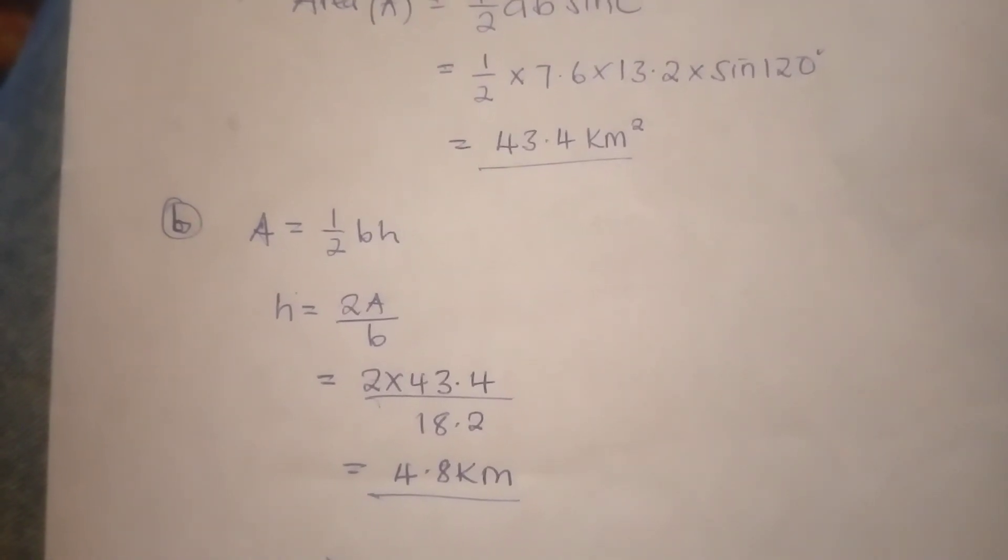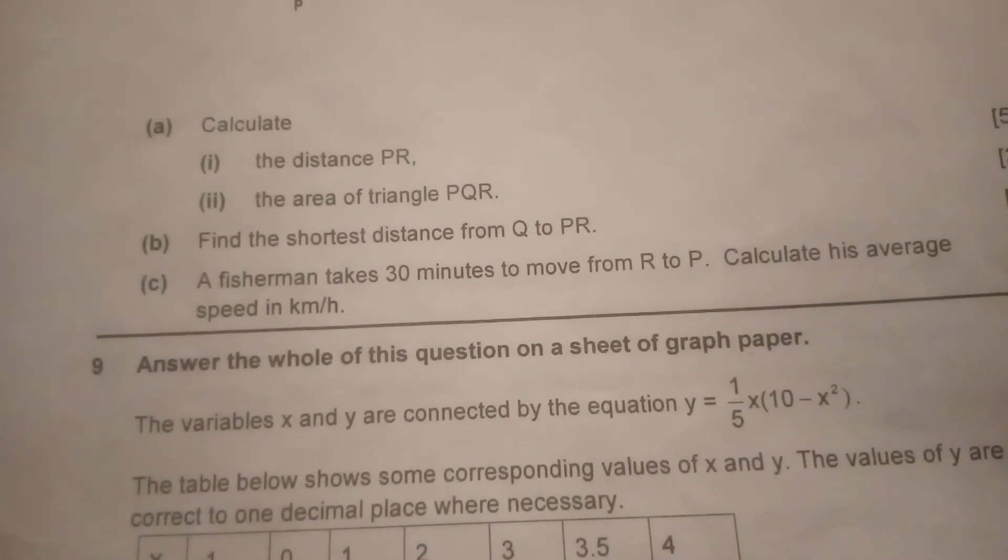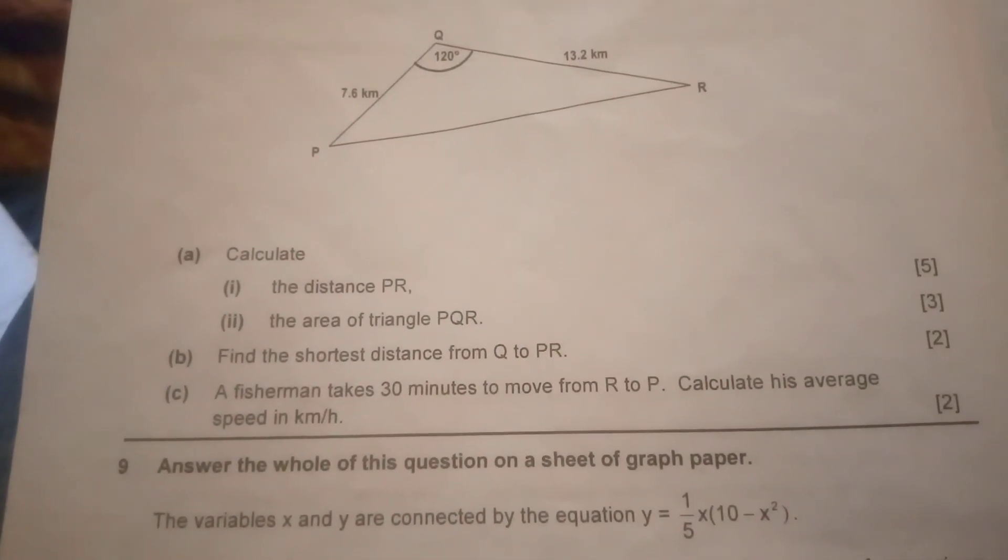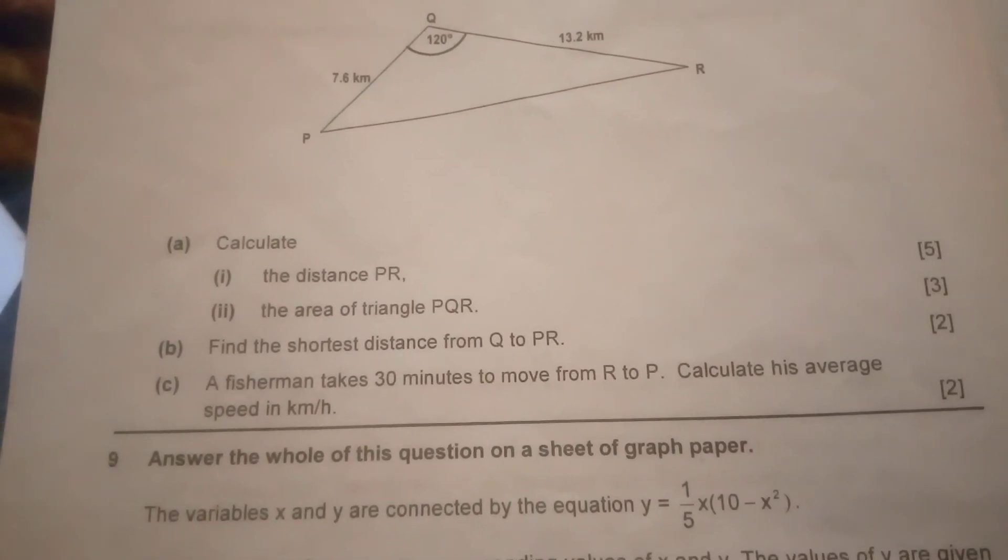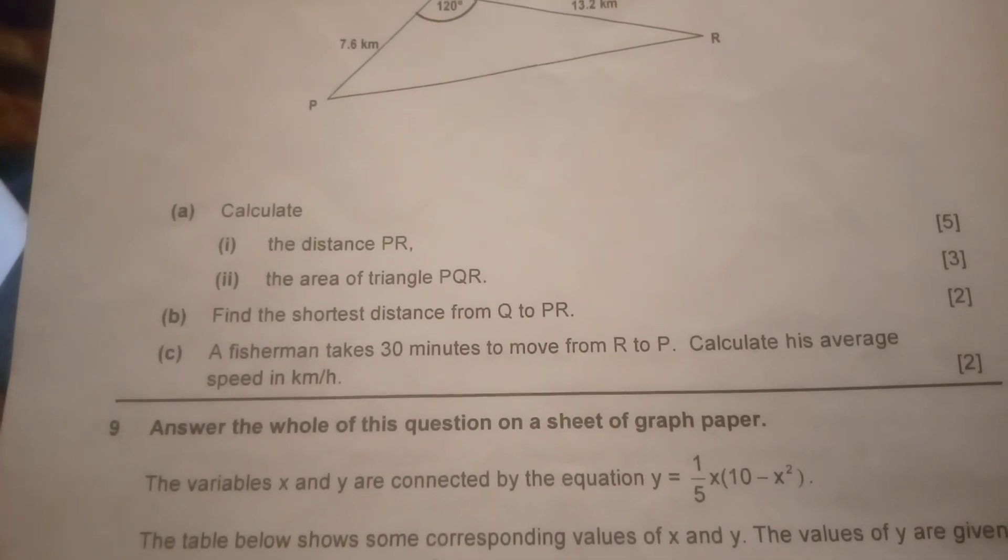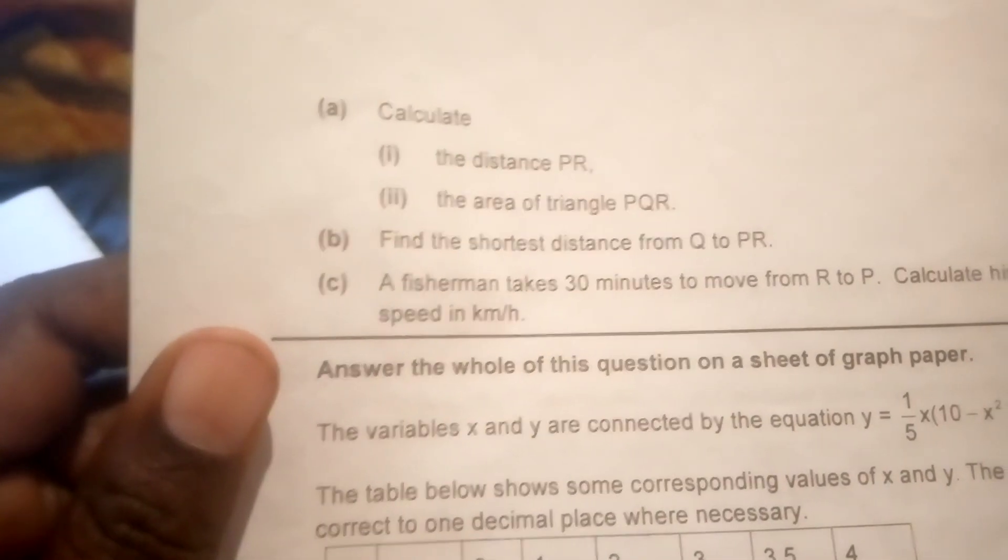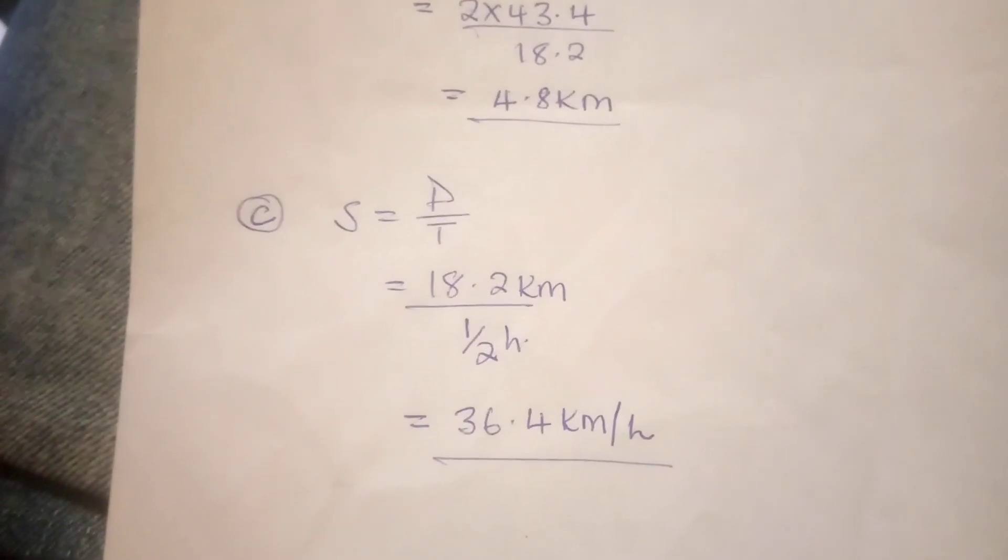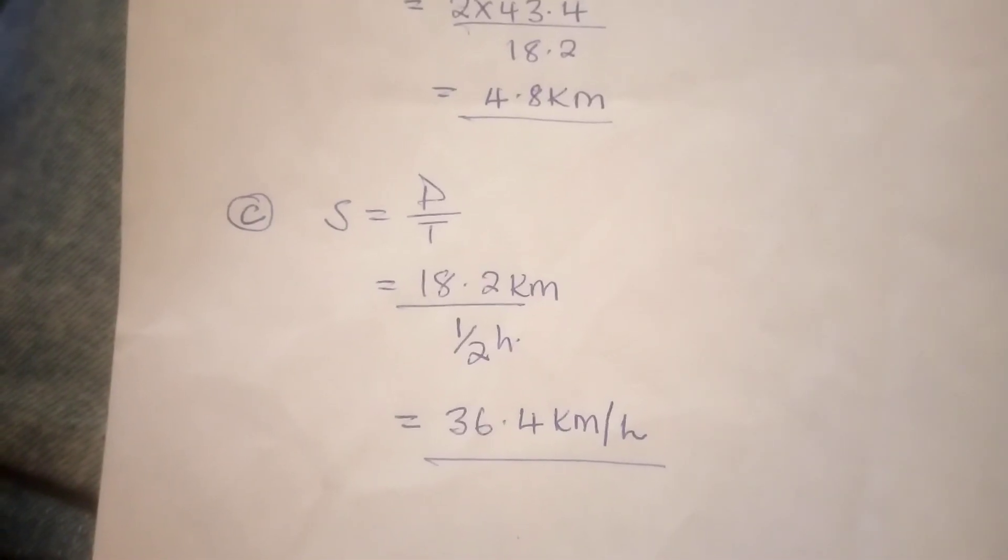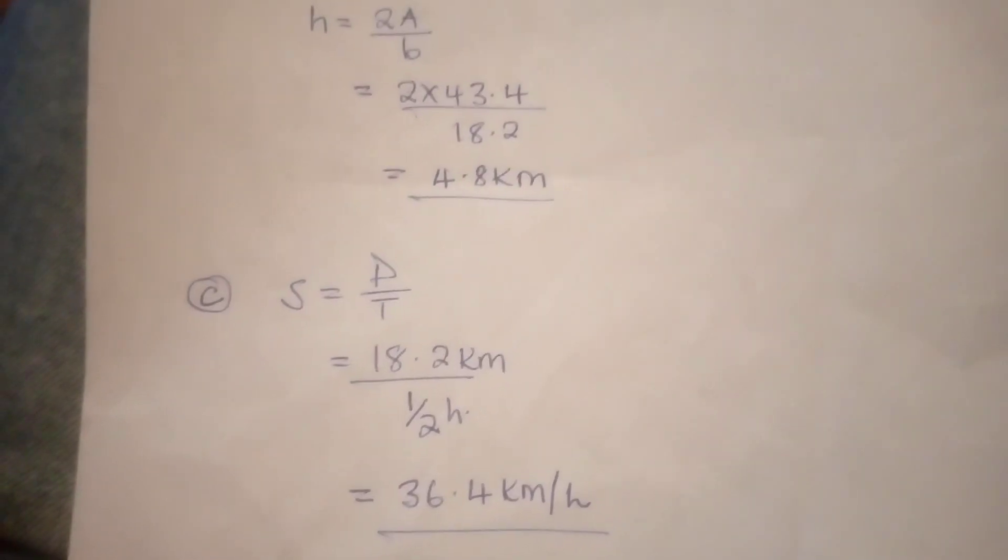As our shortest distance, we go to the last question. A fisherman takes 30 minutes to move from R to P, calculate his average speed in kilometers per hour. The formula for speed is distance over time. We already know the distance from P to R is 18.2 kilometers, over time which is half hour, 30 minutes. So 18.2 kilometers over half hour, and when we work that out the answer is 36.4 kilometers per hour.